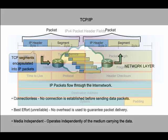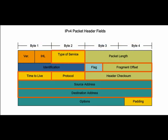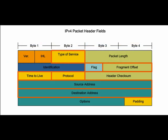IPv4 encapsulates or packages the transport layer PDU into the Layer 3 IP packet so the network can deliver it to the destination host. You can think of the IP packet as an envelope that surrounds the transport layer PDU as it travels through the network. The IPv4 packet remains in place from the time that packet leaves the network layer of the originating host until it arrives at the network layer of the destination host.